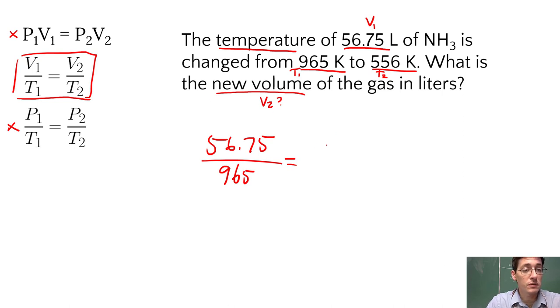What is the new volume is the question, so I'm going to call this X. That's what I don't know, and divide it by T2, 556. Now, quick relationship, my temperature here goes down, so my volume should also go down.